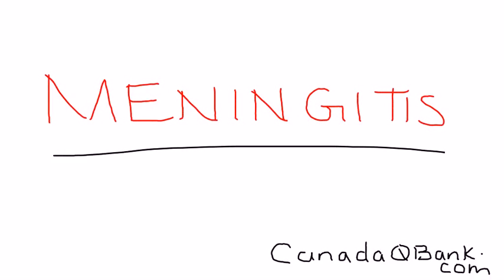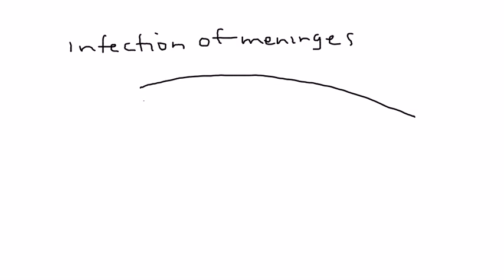Meningitis is the topic, and in this video we'll discuss the acute form of meningitis, specifically the bacterial form, because meningitis has quite a few different types. We're really talking about an infection of the meninges, and I'll draw a basic diagram showing the layers to give you an idea of what we're discussing.